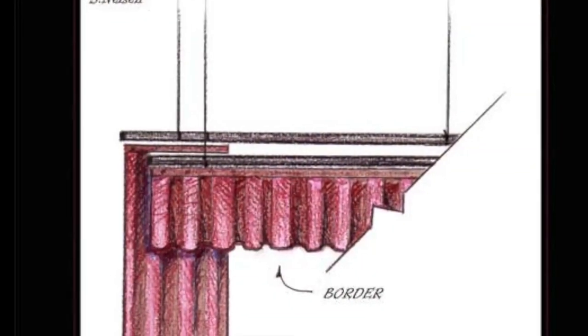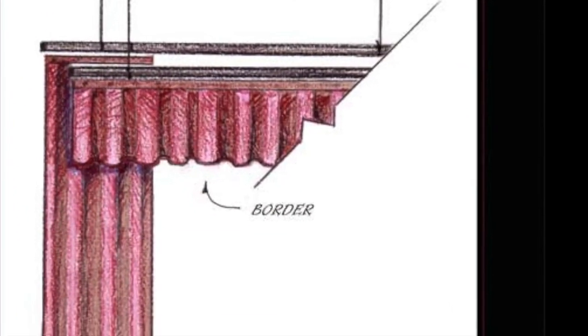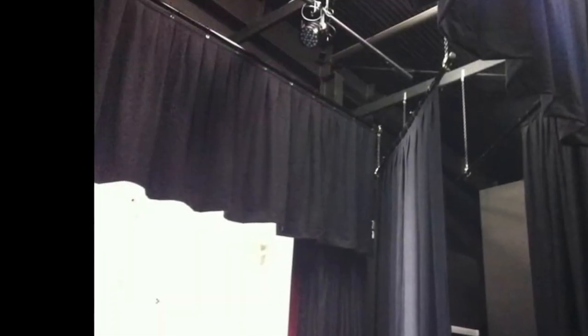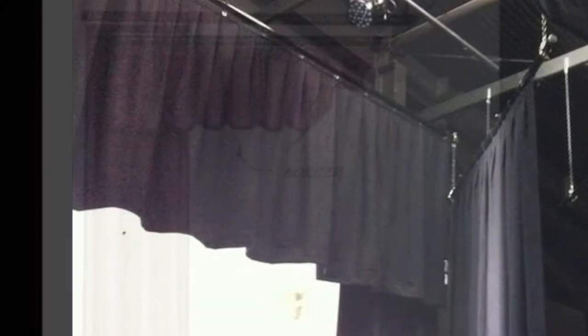Masking curtains are used to conceal the lighting equipment, hardware, and backstage area from the audience. The different kinds of masking curtains include borders, legs, mid-stage, and travelers. Borders are short, wide, and span the width of the stage in order to mask the scenery and lights above the stage — they are the curtains that frame the top of the stage.